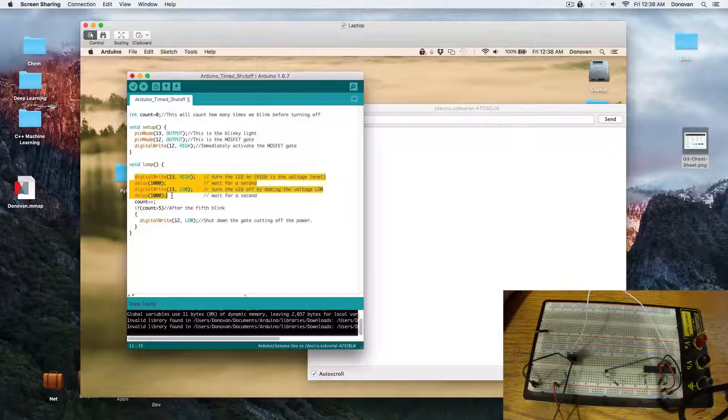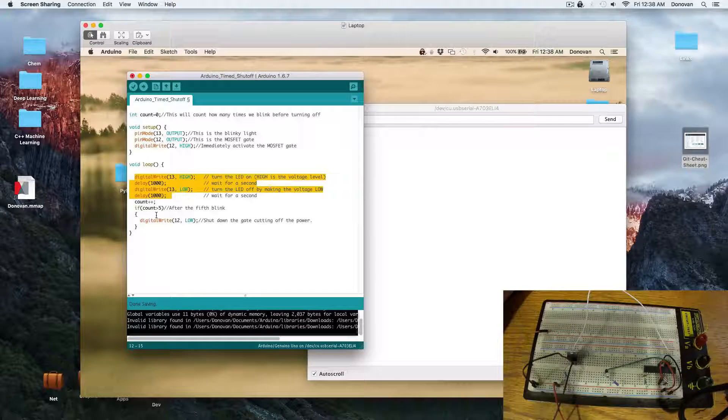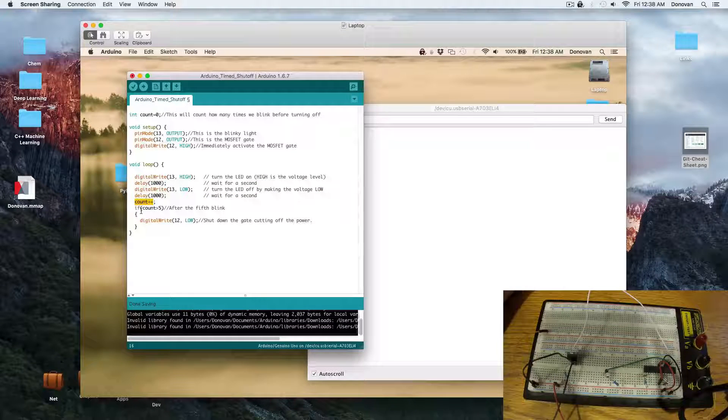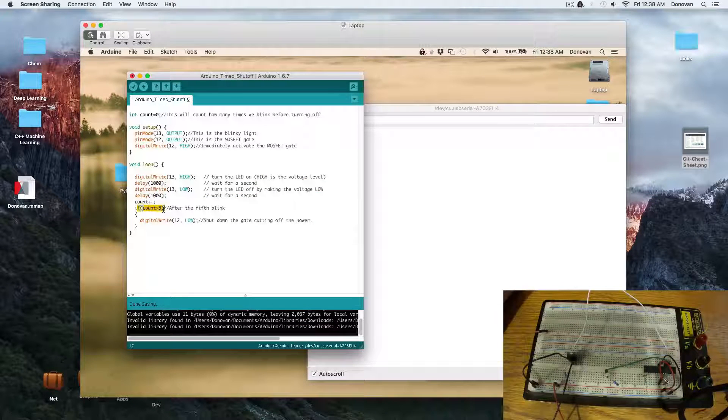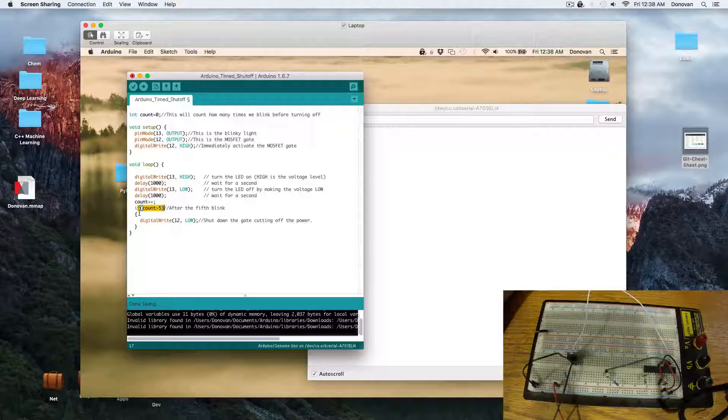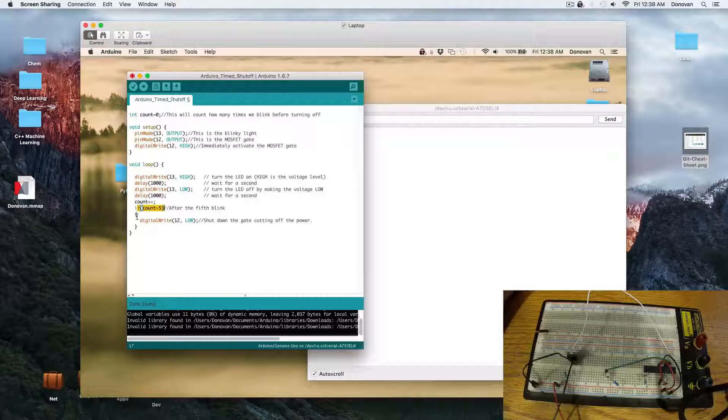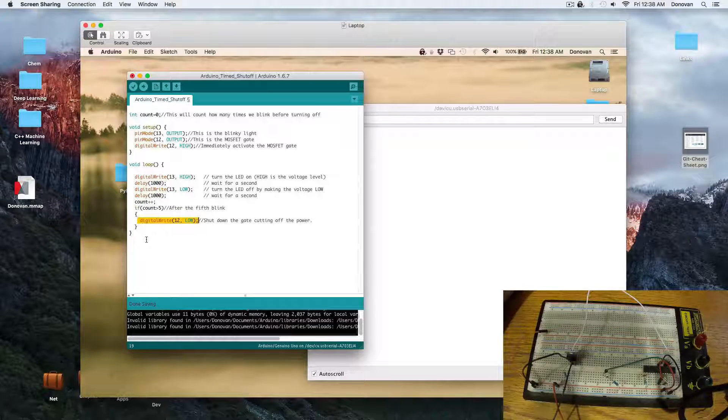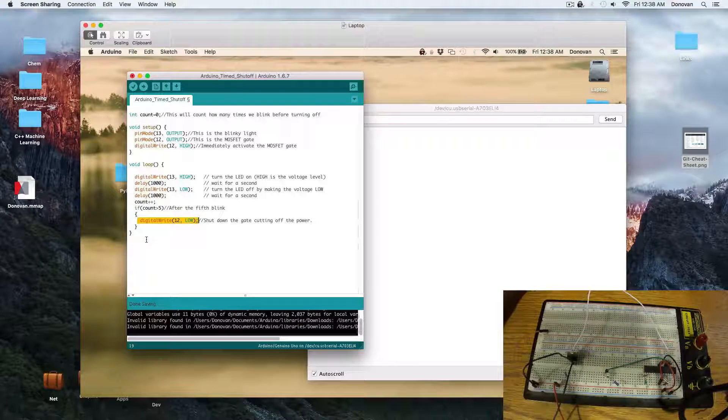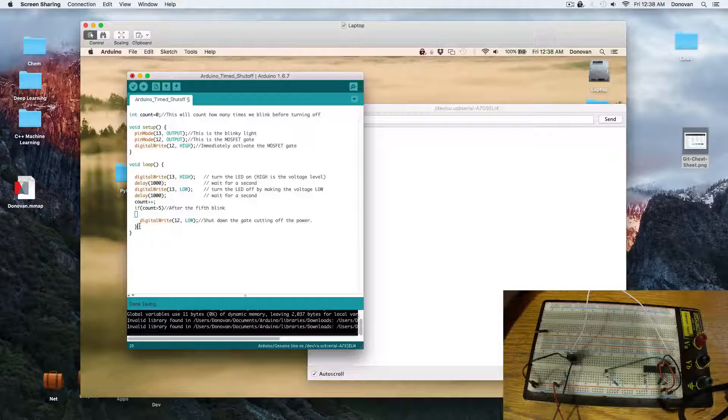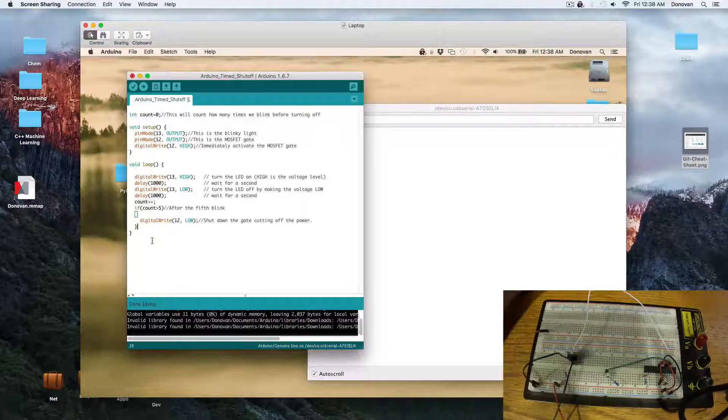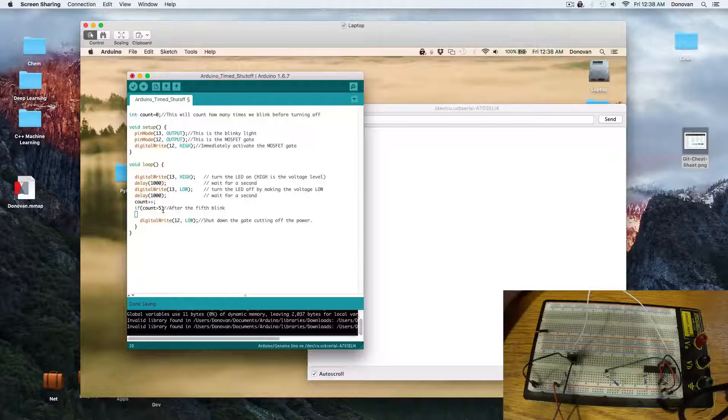Then we just run through the standard blink, which is two seconds, basically on and off. We increment the count up one. And the moment the count has exceeded five, then we say to the pin 12, which is the one holding the gate open, go to low. And as soon as that happens, that's it. This Arduino is powered off. No code will run after this.